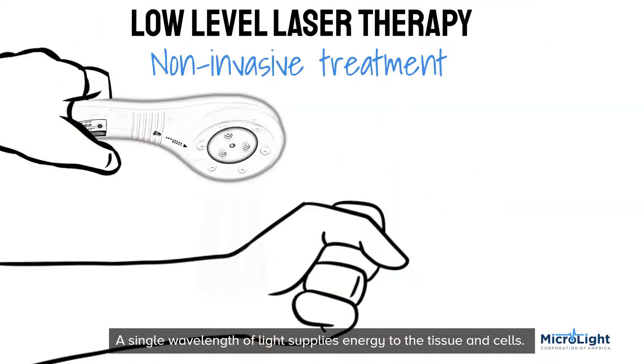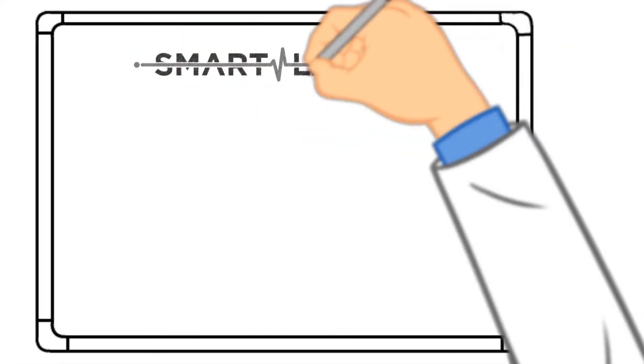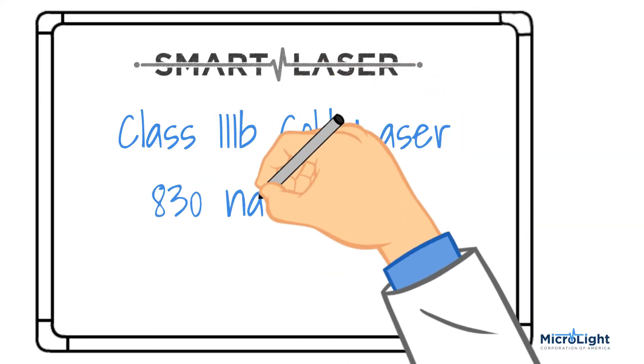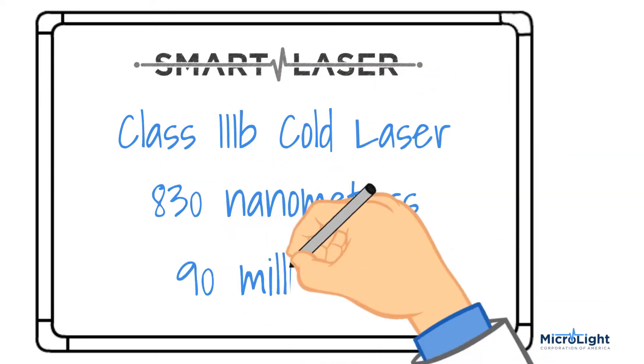The therapy speeds up the natural healing process. The MicroLight Smart Laser is a Class 3B cold laser with a wavelength of 830 nanometers and 90 milliwatts of power, delivering photon energy that penetrates the skin layer up to two inches into the tissue.